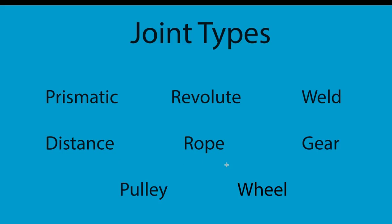And then we have our rope joint, which essentially describes itself. It has a particular property that's good for building ropes in Box2D, such as restricting the maximum distance between two bodies. The nice thing about that particular restriction factor is that even under high load, the rope will not stretch or go into weird moments where the rope isn't actually acting like a rope. It will maintain that rope-like property to the best of its ability, which is better than using a revolute joint or a prismatic joint.